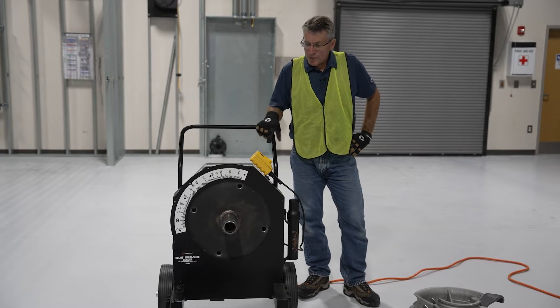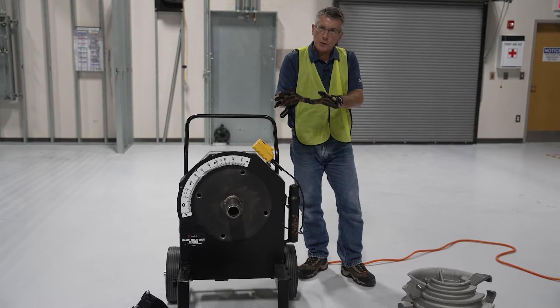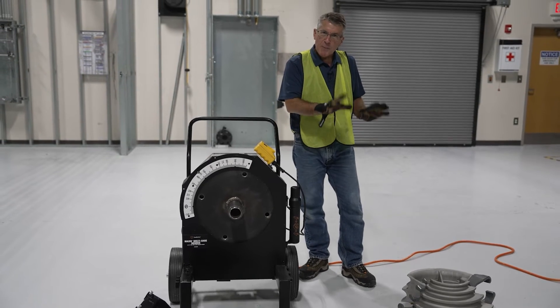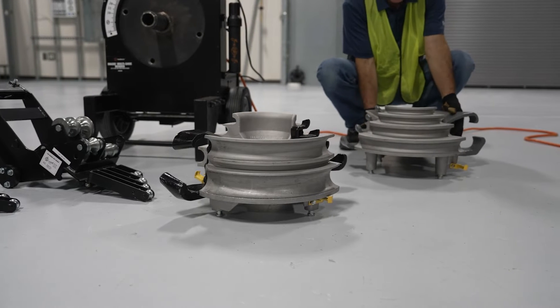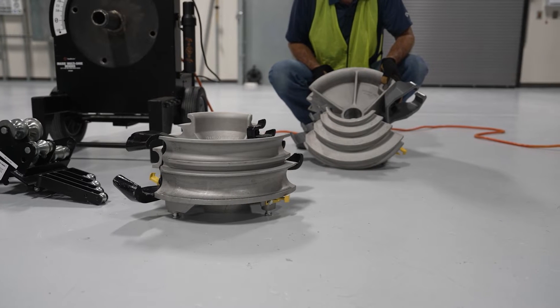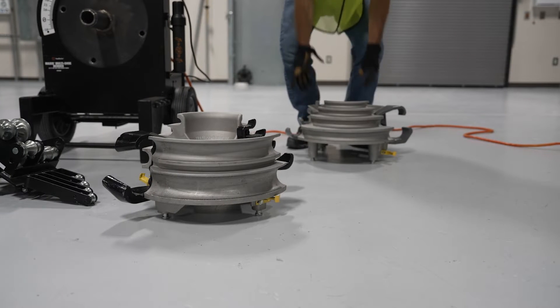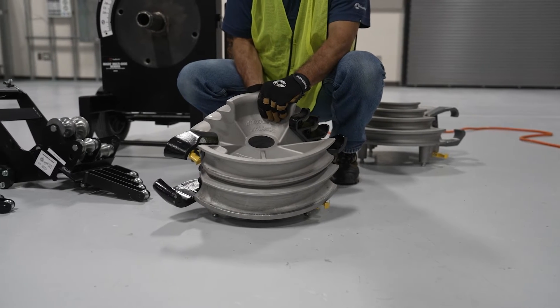To start off, we've got the bender itself and then we've got shoes and roller assemblies. The MSB2000 comes with two bending shoes. One shoe is dedicated exclusively to bending EMT conduit. The other shoe is used for bending both IMC and rigid conduit.